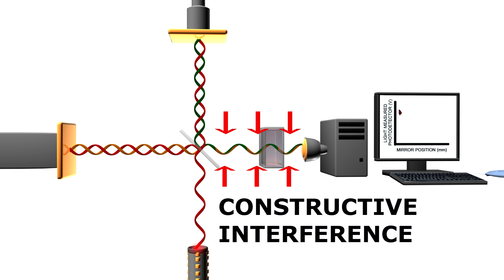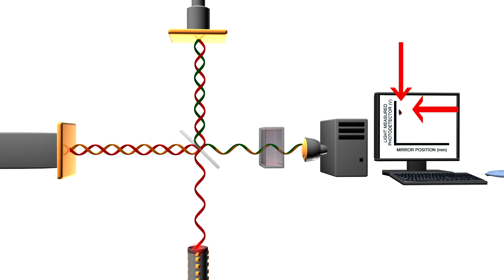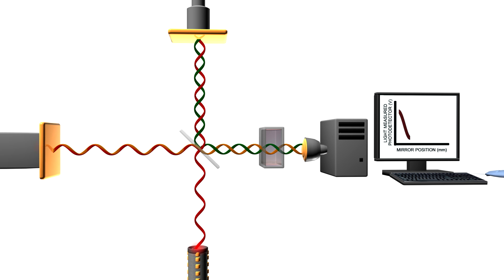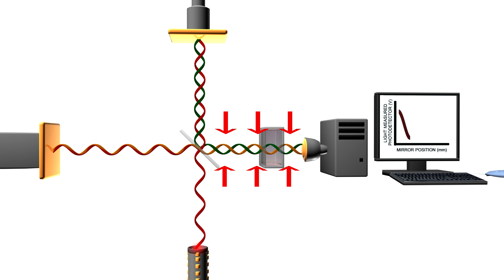At this point, the radiation reaching the detector has the highest intensity. However, if one of the mirrors is moved by a short distance, then the intensity of the radiation reaching the detector suddenly drops. This is because the two recombined beams are no longer in the same phase, and cancel each other out.